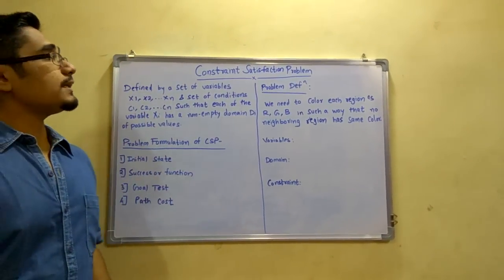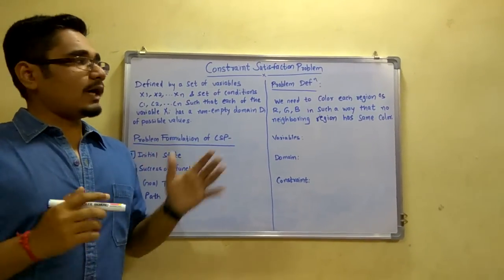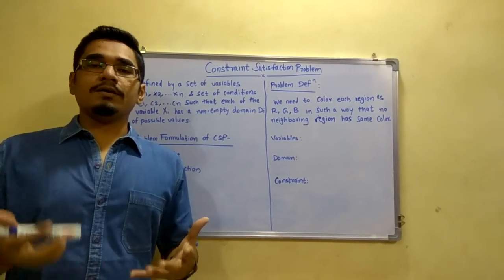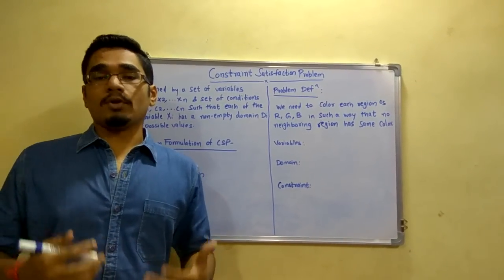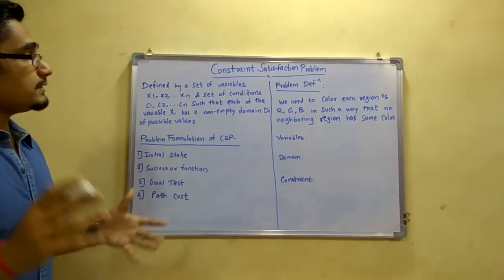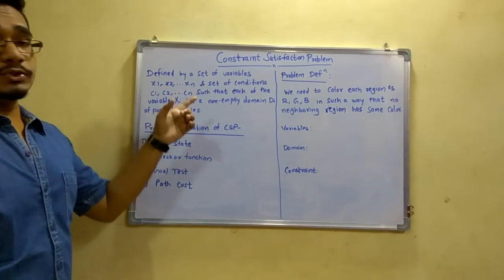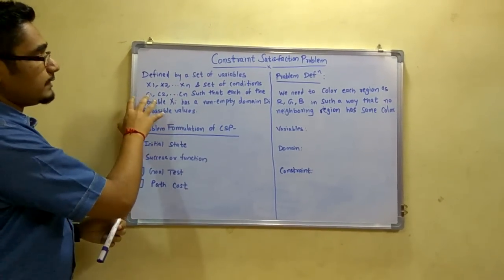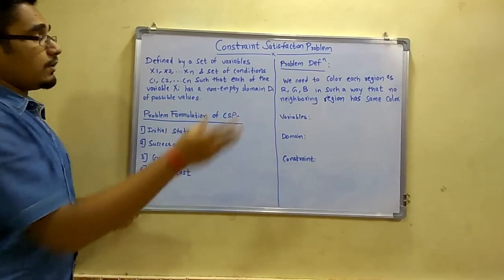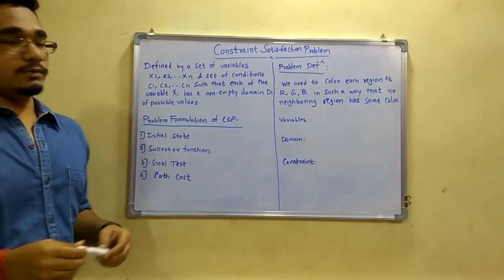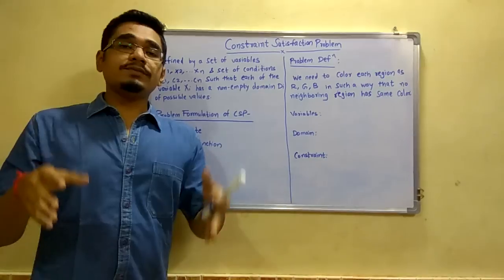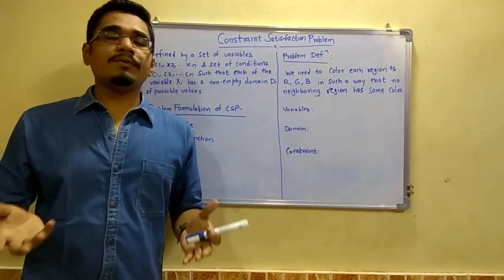In this video we will be discussing the constraint satisfaction problem in Artificial Intelligence. A constraint satisfaction problem is defined by a set of variables x1, x2 up to xn, and a set of conditions c1, c2, cn satisfying these variables, such that each variable xi has a non-empty domain di of possible values. Each variable must have at least one value in its domain.